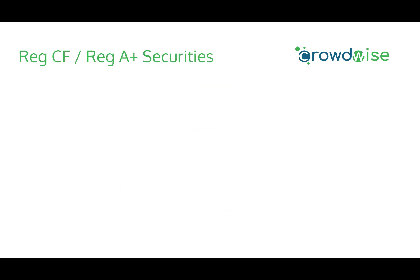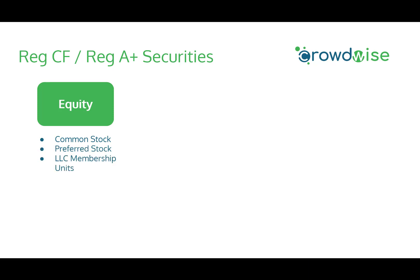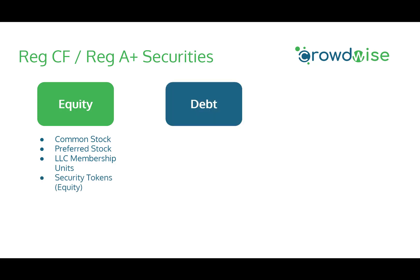When we talk about regulation crowdfunding and regulation A-plus securities, what are the different types you'll expect to see on the funding portals and platforms? Under equity, you'll expect to see common stock, preferred stock, as well as LLC membership units — essentially similar to stock in a corporation. Also, security tokens, specifically equity tokens. Under debt instruments in equity crowdfunding, there are interest notes, revenue sharing notes, and security tokens which are a form of debt — for example, debt payable by assets, or DPAs.